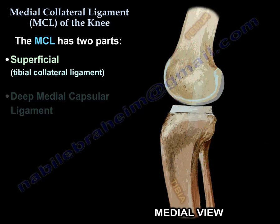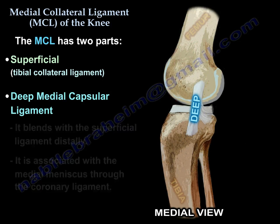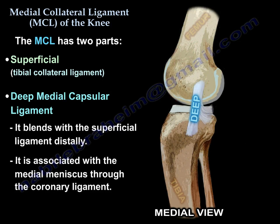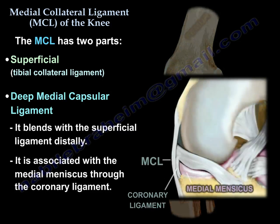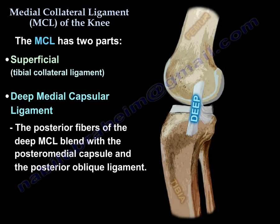The other part of the Medial Collateral Ligament is the Deep Medial Capsular Ligament. It blends with the superficial ligament distally and it is associated with the medial meniscus through the coronary ligament. The posterior fibers of the Deep MCL blend with the posterior medial capsule and the posterior oblique ligament.